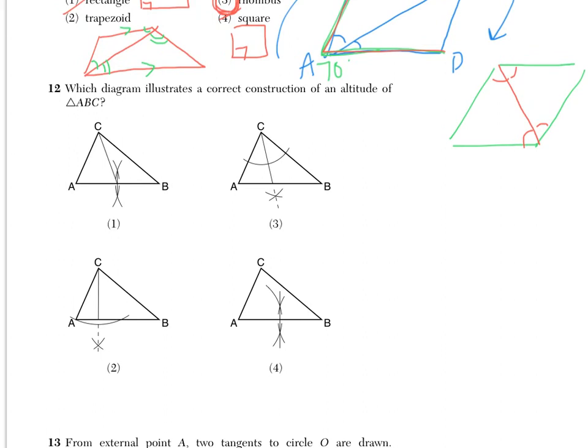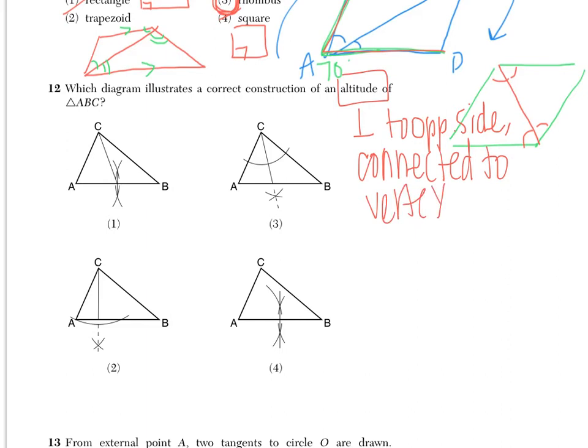Number 12 says, which diagram illustrates a correct construction of an altitude of triangle ABC? Now, an altitude is perpendicular to the opposite side but it has to connect to the vertex. So what we need to do is actually start by creating a smiley arc from the vertex. Say this is my vertex up here. Create a smiley arc. And then from there, we get two endpoints.